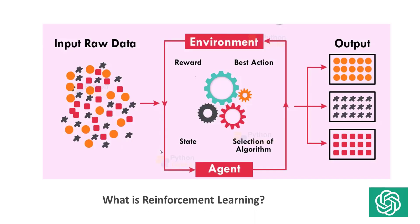Now we will learn what is reinforcement learning. Reinforcement learning is a machine learning training method based on rewarding desired behaviors and punishing undesired ones. In general, a reinforcement learning agent is able to perceive and interpret its environment, take actions, and learn through a trial and error mechanism.